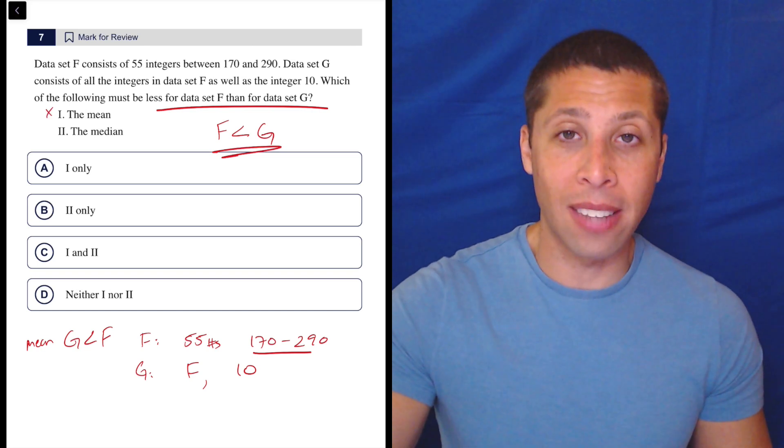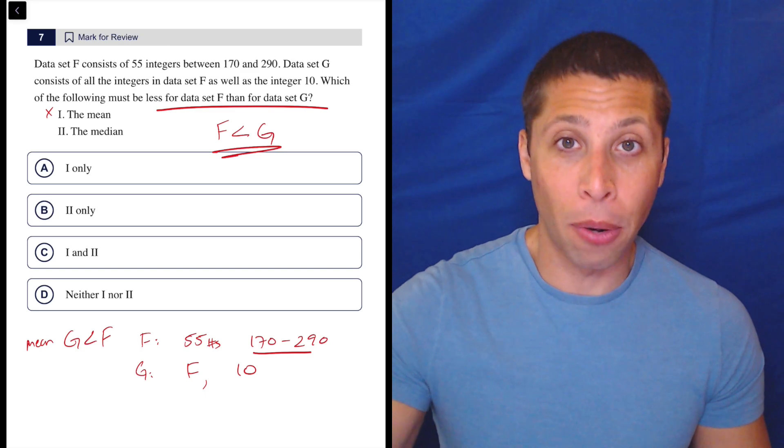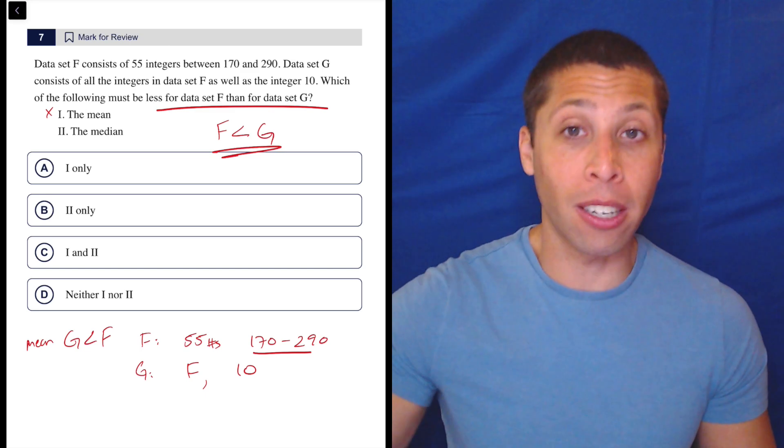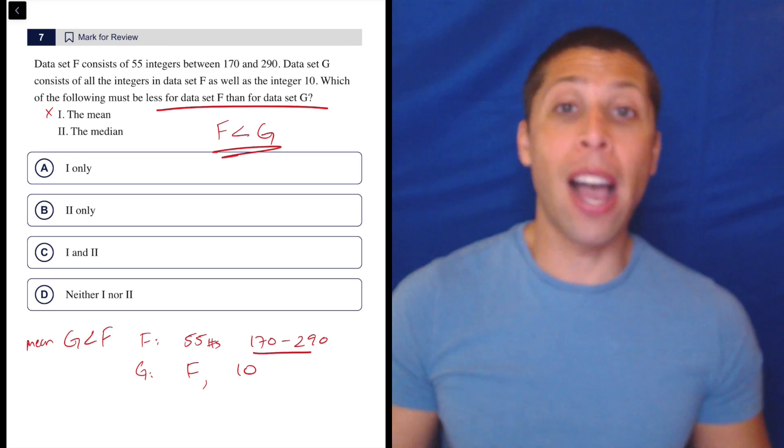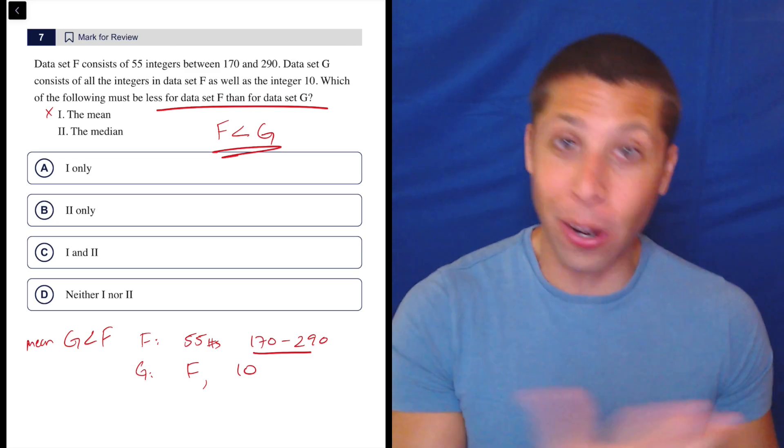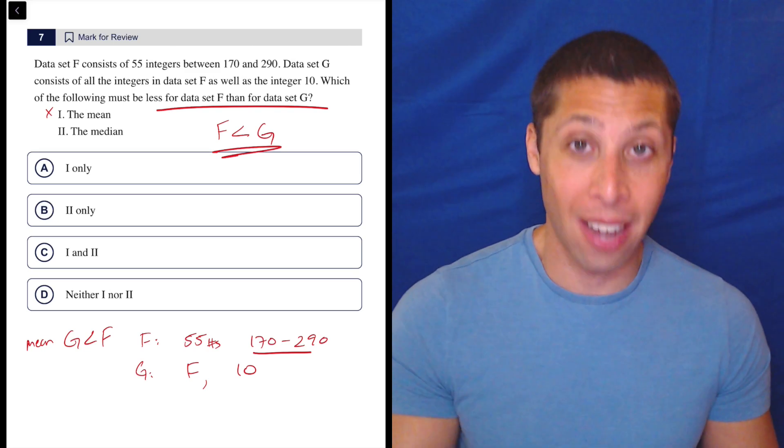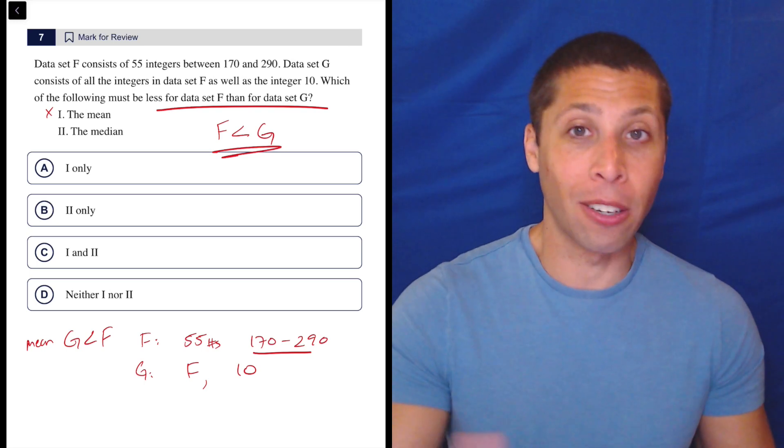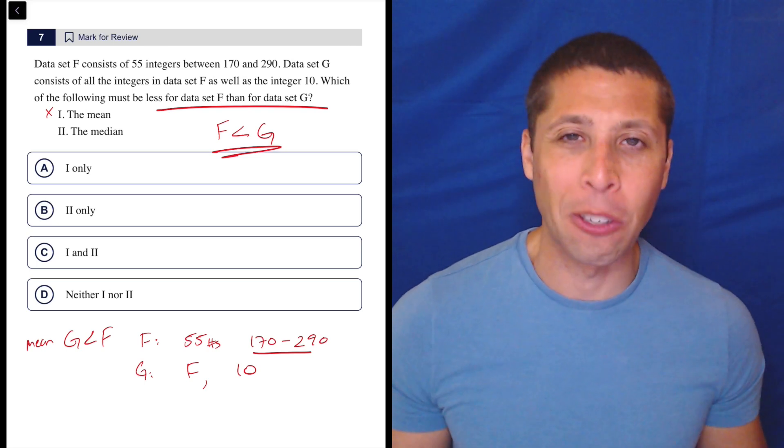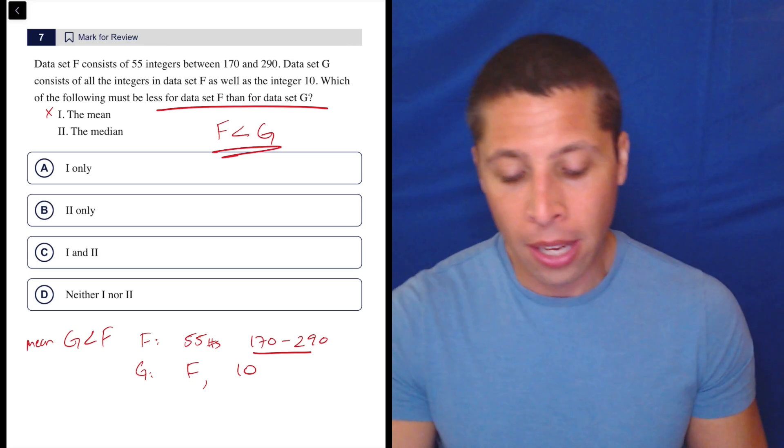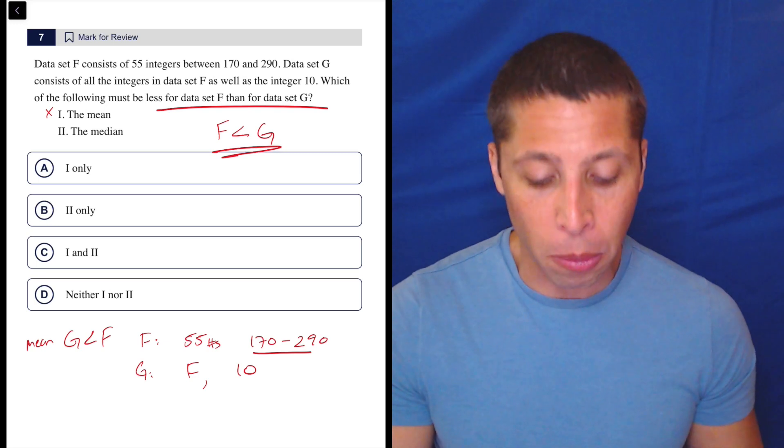So the mean is not lower for F, no way. We are definitely lowering this average by adding in a really low number. Just think about how your tests work in school. If you get a really bad grade on a test, suddenly your average goes down, no matter how high all those other grades were. It's not maybe going to go down by a ton, but it's going to be affected. That's what's happening here. The grading system is off because we're 170 to 290, but it's the same principle. So that gets rid of Roman numeral one.